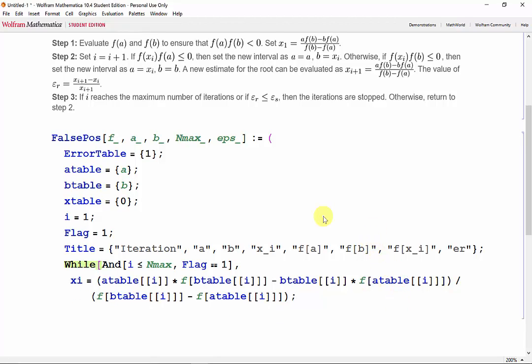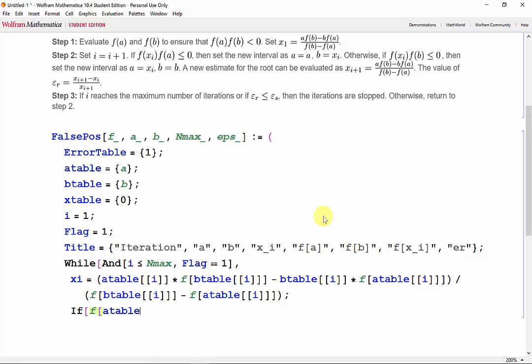And now the rest of the steps are exactly the same as the bisection method. So now we need to check if f(atable[i]) times f(btable[i]) is less than or equal to 0.